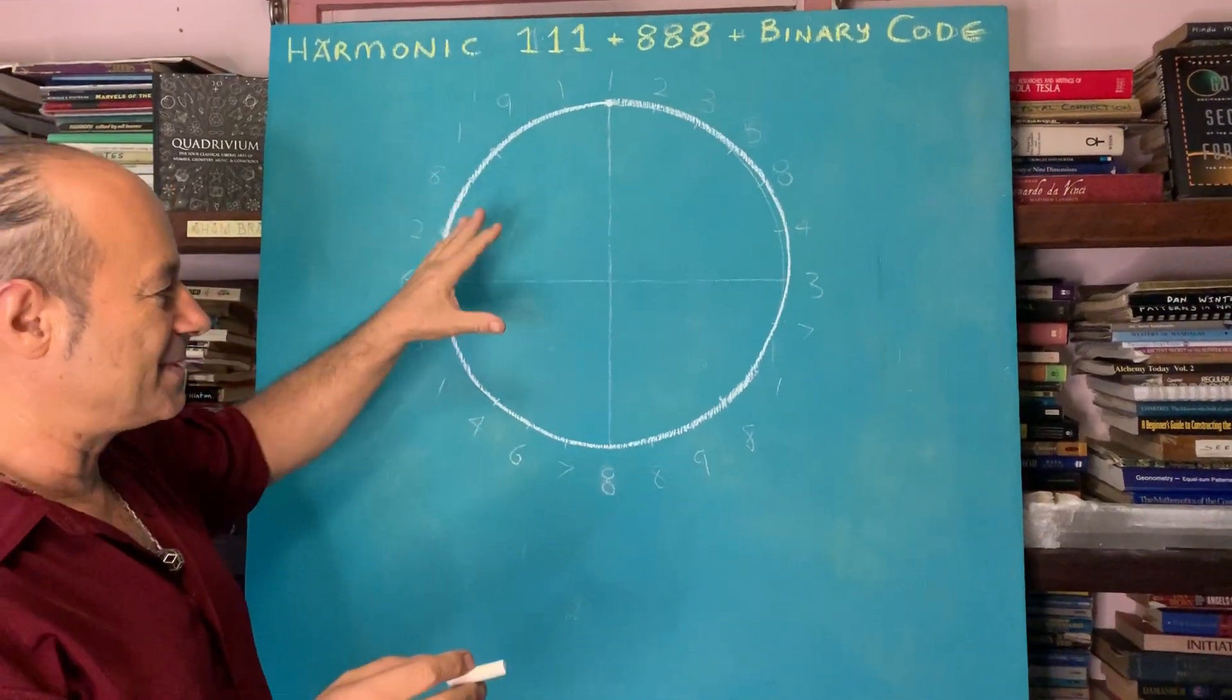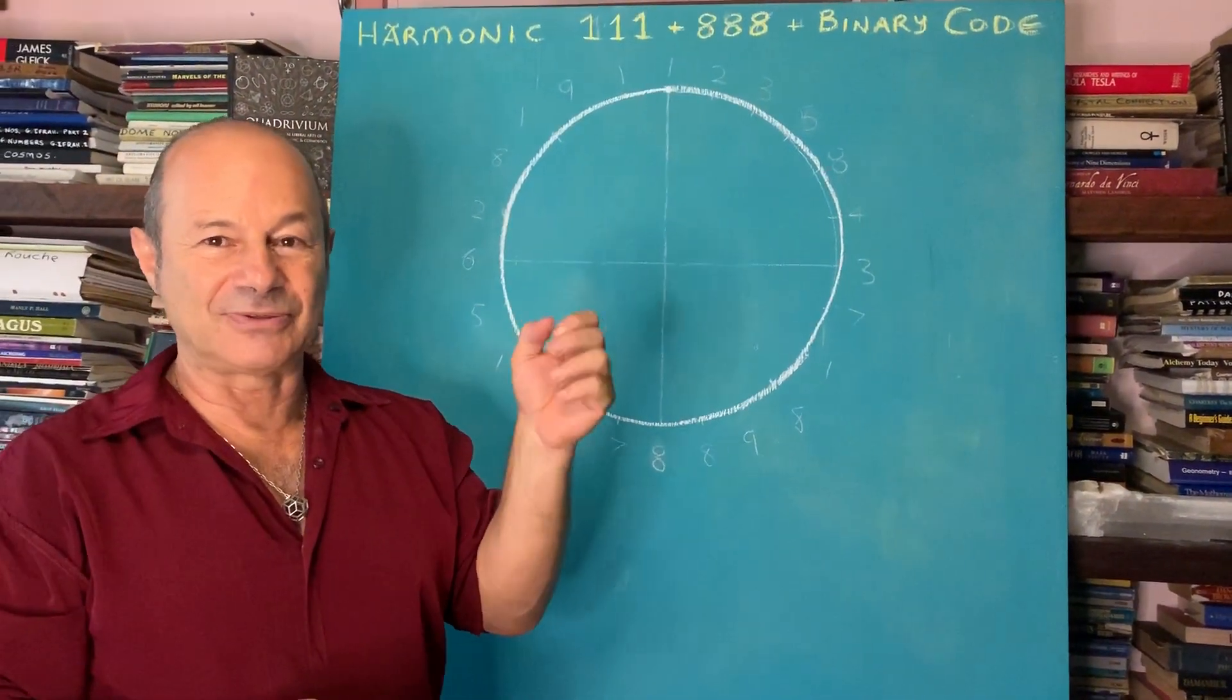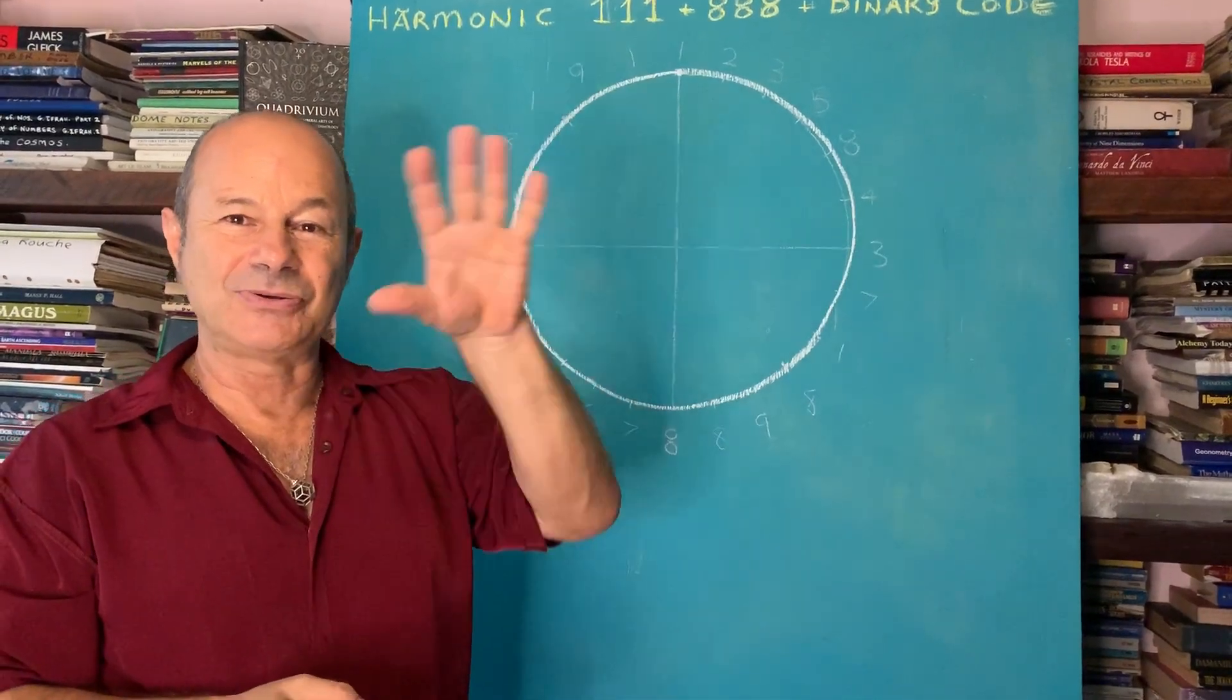The punchline to all this is something to do with what we call counter-rotating fields. There's two sequences that are going two different spin ratios.